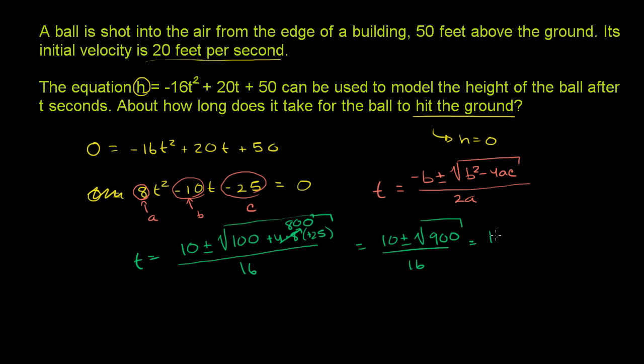And this is equal to 10 plus or minus, square root of 900 is 30 over 16. And so we get time is equal to 10 plus 30 over 16 is 40 over 16, which is the same thing if we divide the numerator and the denominator by 8. That's 5 over 2. So that's one solution if we add the 30.